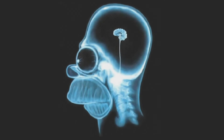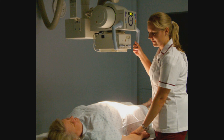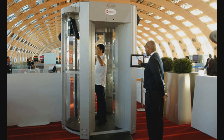X-rays have a wavelength of 0.01 nanometers to 10 nanometers, with frequencies ranging from 30 petahertz to 30 exahertz, and energies from 100 electron volts to 100 kilo electron volts. They are longer than gamma rays but shorter than ultraviolet rays. Benefits of x-rays include their use in the medical field to see inside a patient's body, allowing doctors to check for broken bones or damaged tissue, and in airport security for scanning luggage.